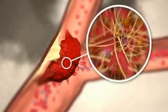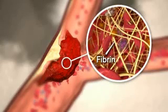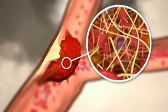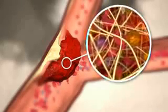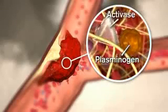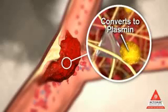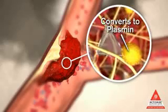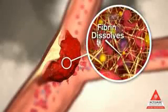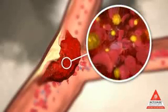Now let's look at the thrombus itself. Inside the thrombus are strands of fibrin, the protein that forms a clot. Enmeshed within the fibrin is plasminogen, the inactive precursor of plasmin. Activase is administered by IV infusion within three hours of acute ischemic stroke symptom onset. Activase binds to the fibrin in a thrombus and converts plasminogen to plasmin. Plasmin then breaks the strands of fibrin and dissolves the clot.